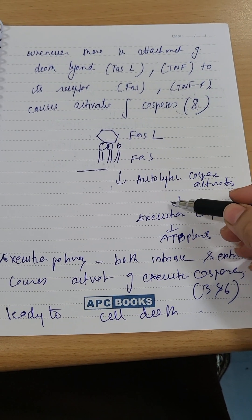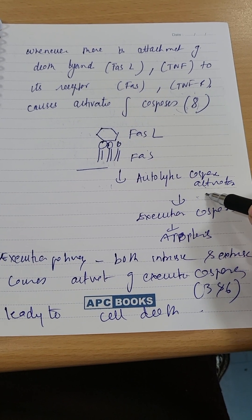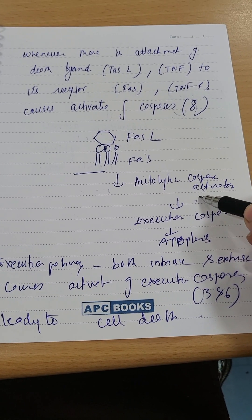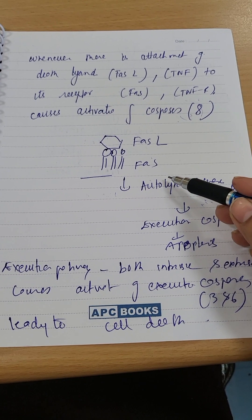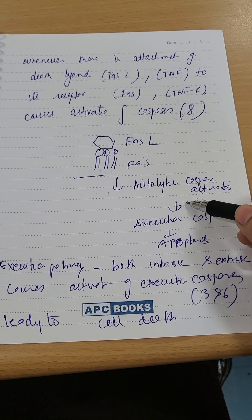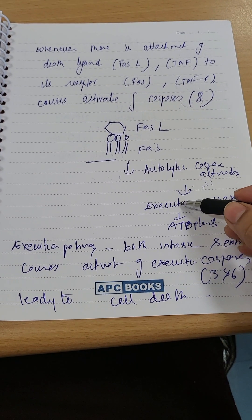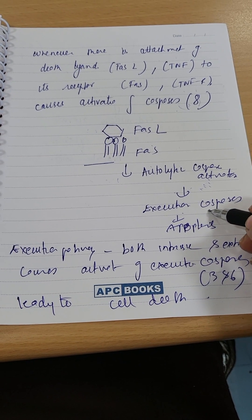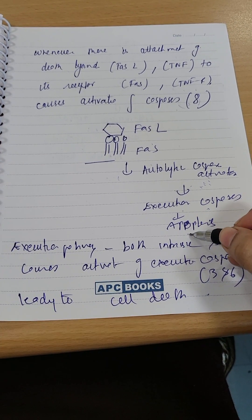FAS ligand, FAS receptor activation leads to autolytic caspase activation. Normally caspase is inactive, but when intrinsic or extrinsic pathway activates, there will be autolytic caspase activation. Executioner caspase is activated and ultimately the process of apoptosis.